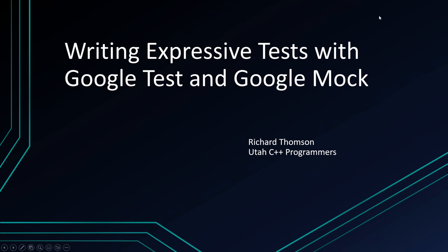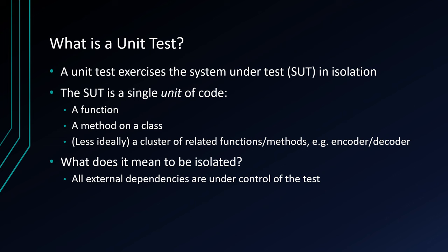What is a unit test? Briefly, a unit test exercises a system in isolation. We call it a unit test because we're going to exercise a single unit of code — either a function, a method on a class, or sometimes a clump of related functions and methods, like an encoder/decoder situation. When we say isolated, we mean all the external dependencies of the code we are exercising are under the control of the test — things like the clock, the database, networking, anything that talks to code outside of the code we're testing.